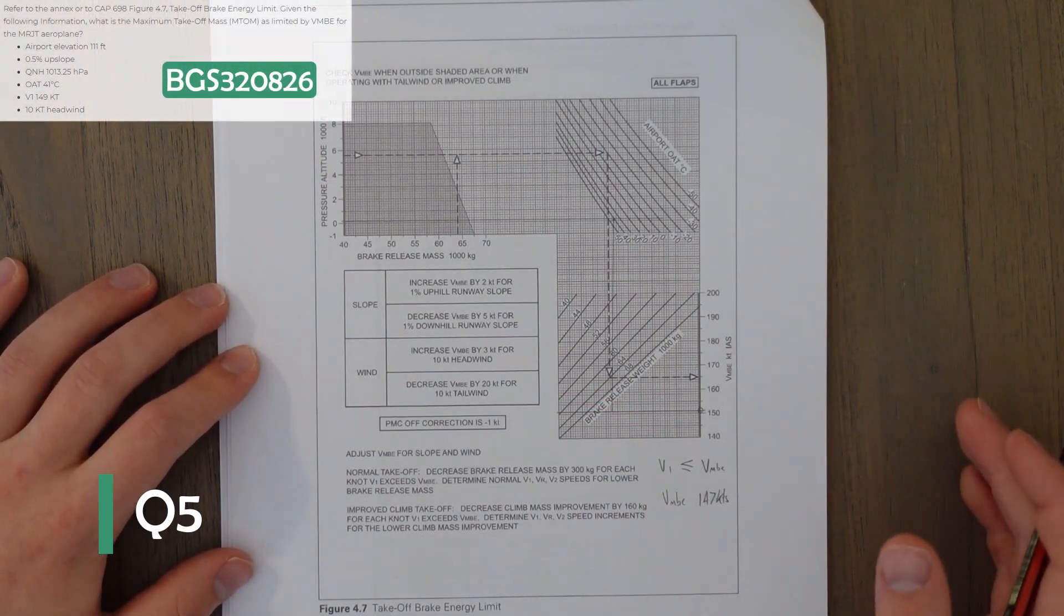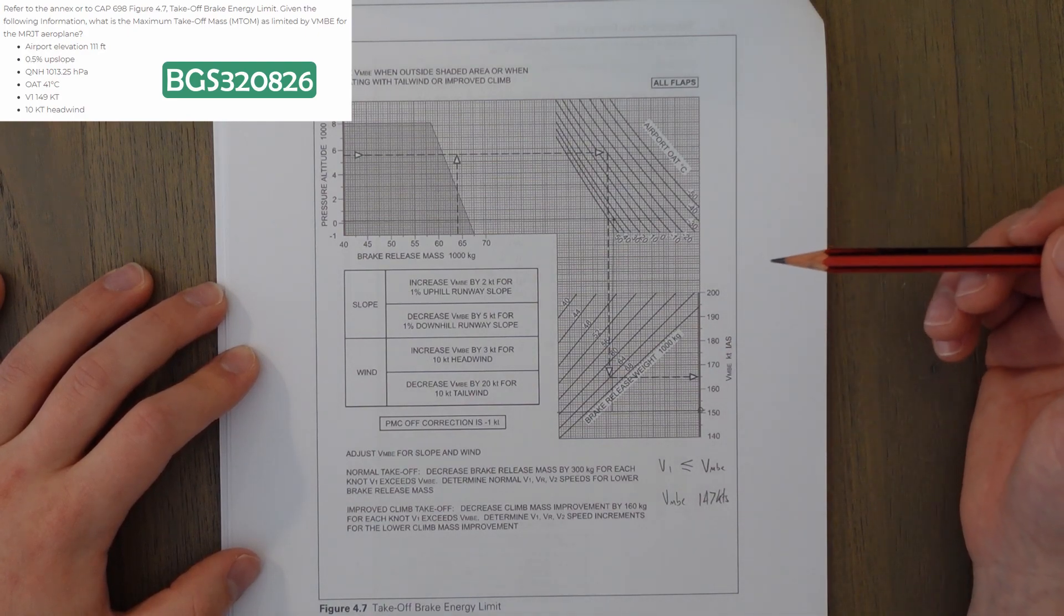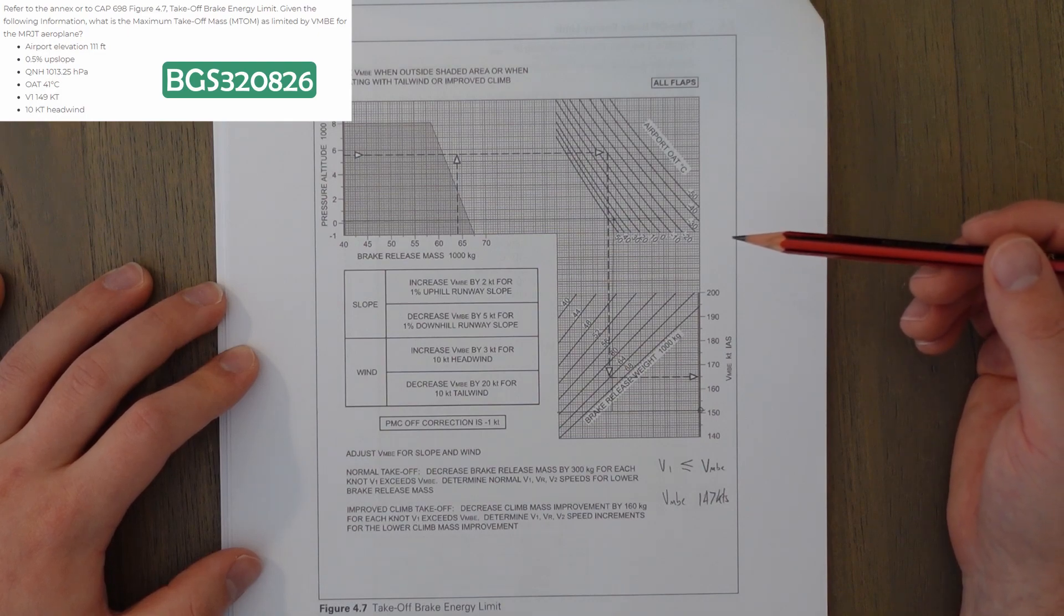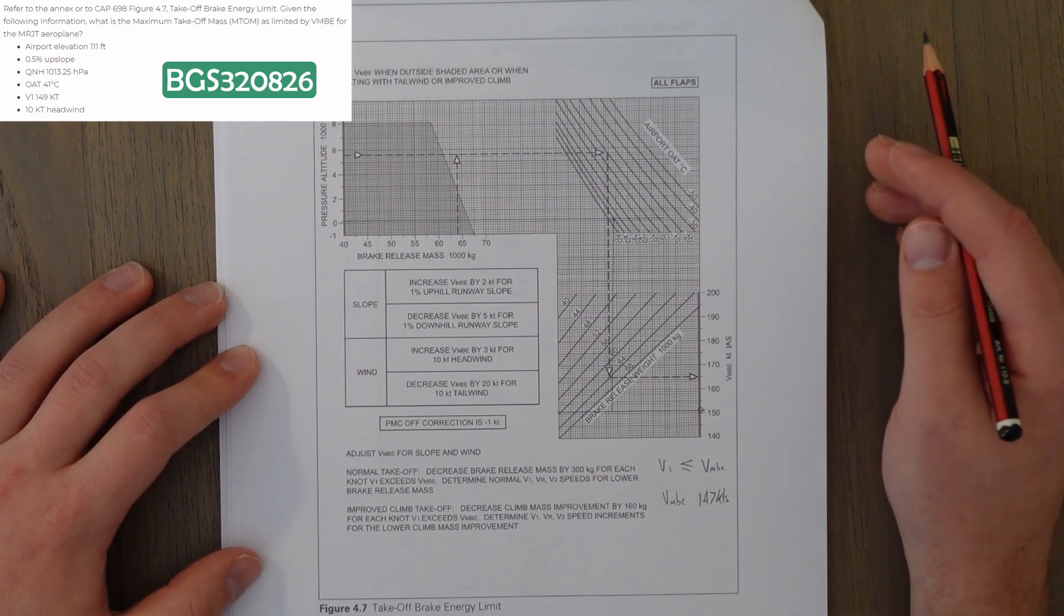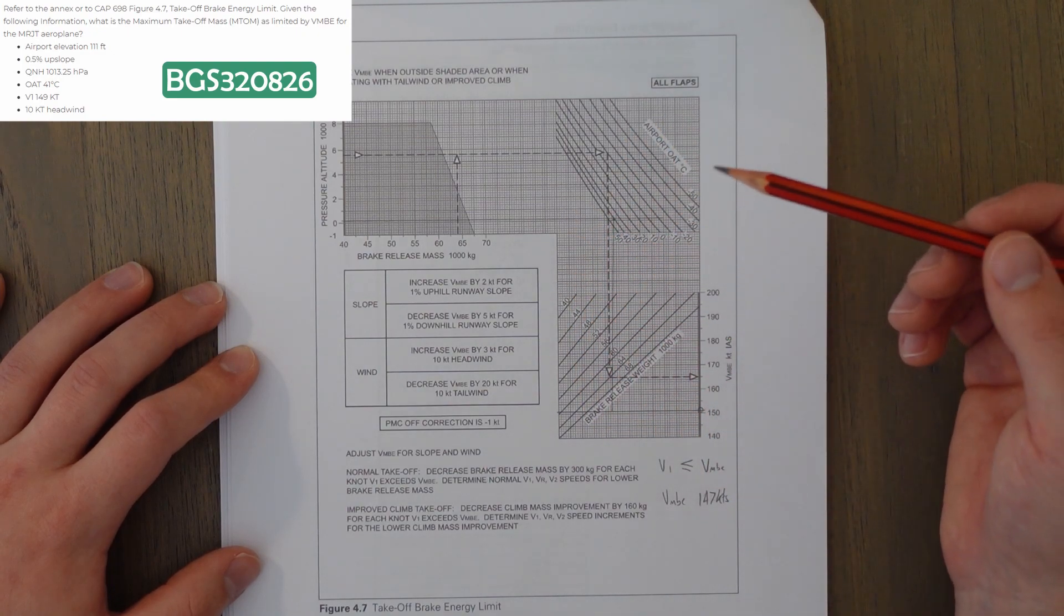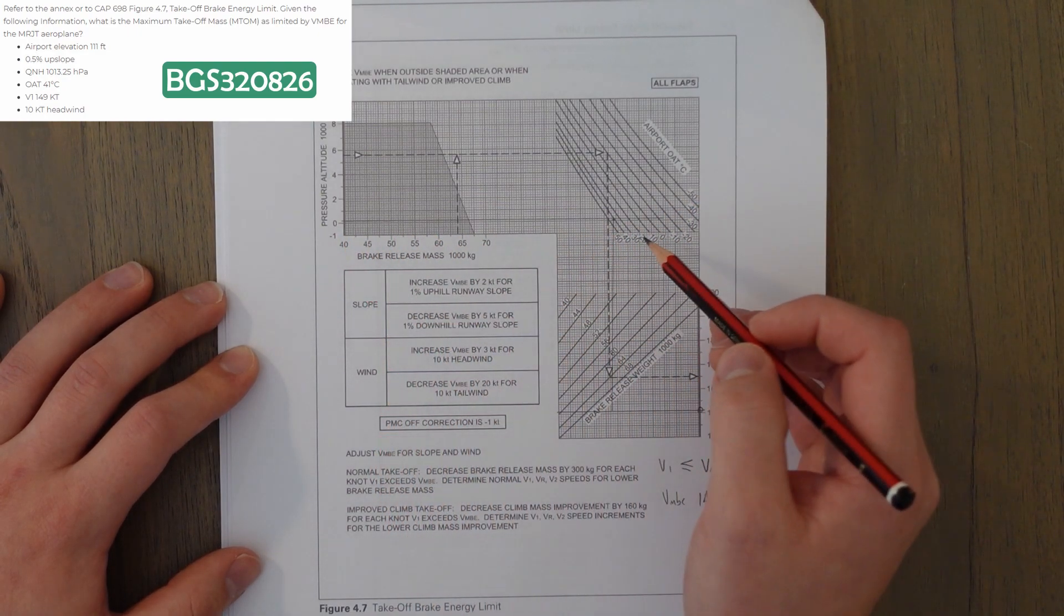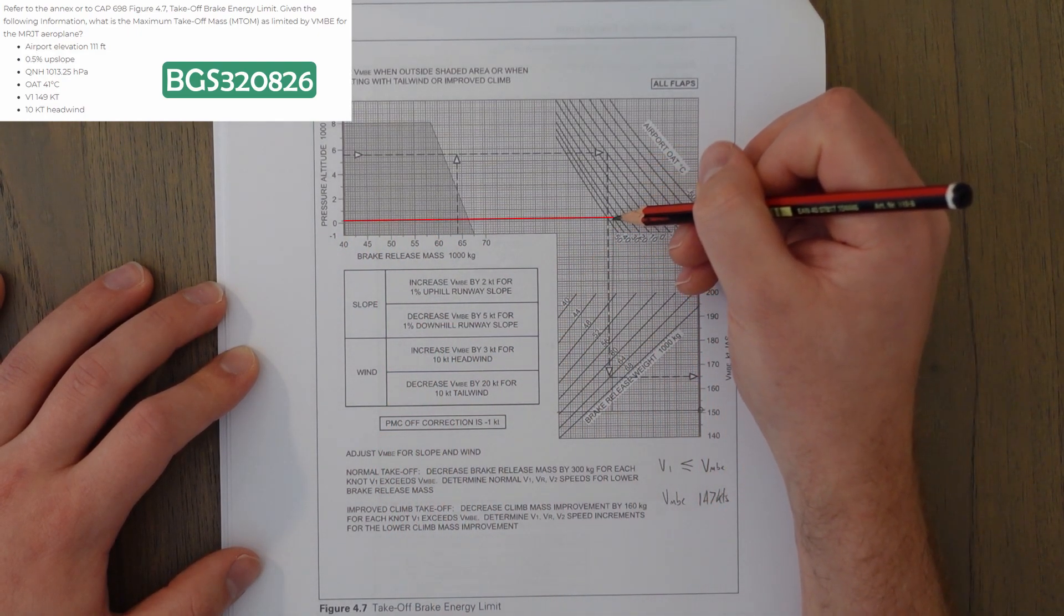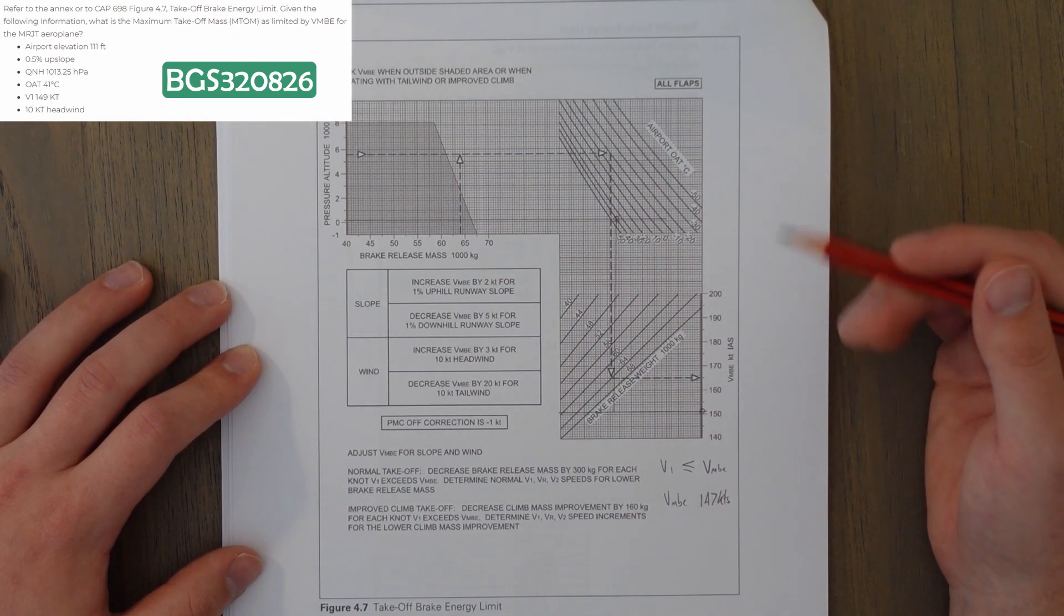In this question, we're finding out the maximum takeoff mass limited by the brake energy speed, given the following information. Elevation is 111 feet. We've got a 0.5% upslope. QNH of 1013.25. It's 41 degrees. V1 is 149. And we've got a 10 knot headwind. So, we'll start off in the normal way by entering in what we know, which doesn't appear to be very much, which is actually only 111 feet and 41 degrees, which gives us one singular point here, which isn't even close enough to working out values for this graph.